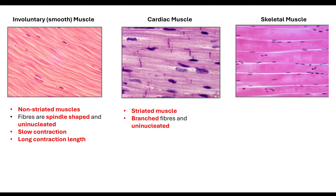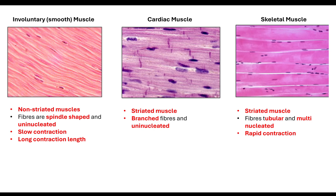Then we have our skeletal muscle. Skeletal muscle is again striated. So comparing involuntary smooth muscle to cardiac and skeletal: the involuntary is non-striated whereas both cardiac and skeletal are striated. Comparing skeletal muscle to cardiac, the fibres aren't branched — they're tubular in skeletal muscle — and we have multinucleated fibres, meaning more than one nucleus. Skeletal muscles are found most places in the body and are responsible for rapid contraction with short contraction length, such as when you contract your bicep and tricep.